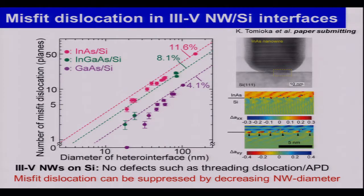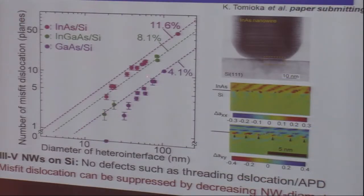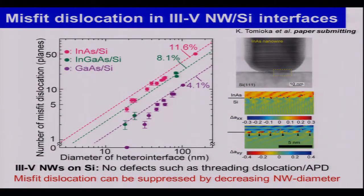This graph shows the number of misfit dislocations with variation of diameter of the heterointerface. When we grow indium arsenide nanowires on silicon, the heterointerface usually has misfit dislocations, with periodicity following the lattice mismatch. However, when we decrease the diameter of the heterointerface, the number of misfit dislocations decreases. In the case of gallium arsenide nanowires on silicon substrate, we achieved coherent growth without misfit dislocations. Furthermore, the nanowire has no defects such as threading dislocations or anti-phase domains, which are typically observed in 3-5 on silicon heteroepitaxy.